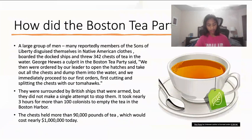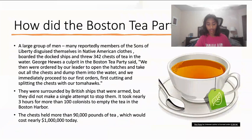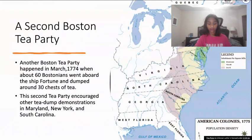How did the Boston Tea Party happen? On December 16, 1773, many reportedly members of the Sons of Liberty disguised themselves in Native American clothes and threw 90,000 pounds of tea into Boston Harbor — an amount that would cost nearly $1 million today.